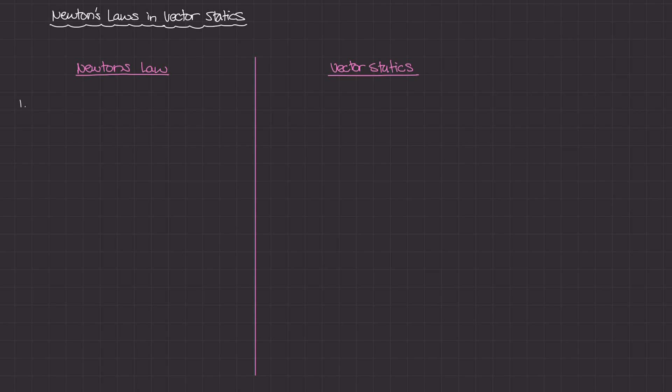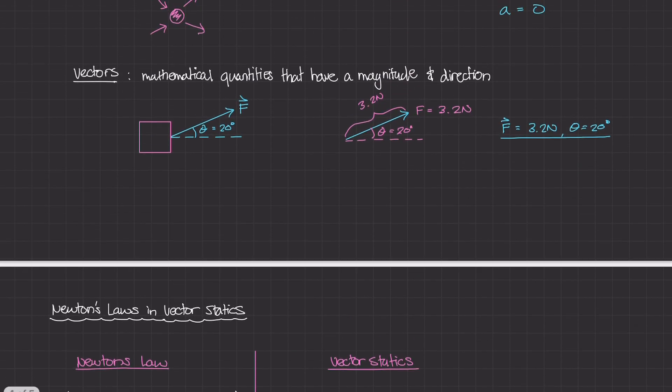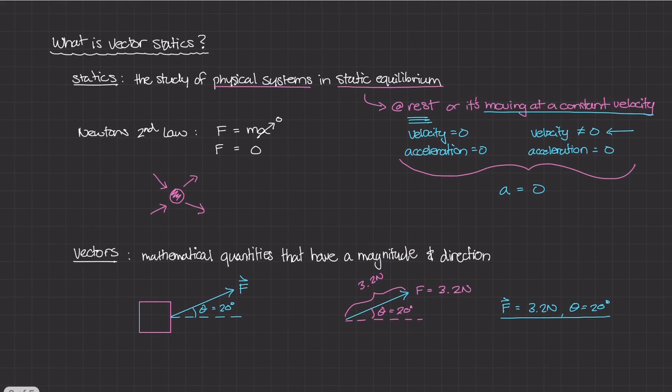Newton's very first law is that a body at rest will stay at rest, and a body in motion will remain in motion, unless it's acted upon by some external force or forces. In the last video, we defined what vector statics is, and when talking about the definition of statics, we came up with the term static equilibrium. Static equilibrium means that the acceleration of an object subjected to forces is equal to zero.